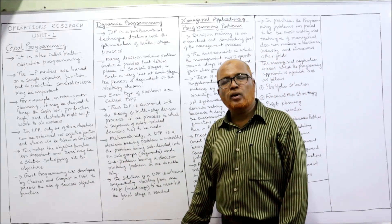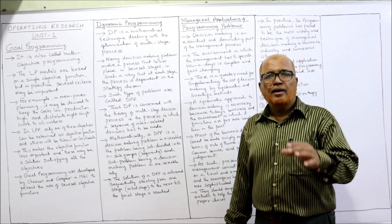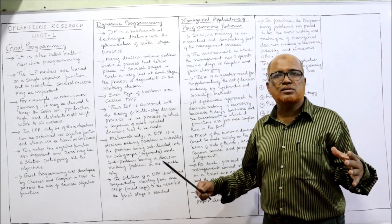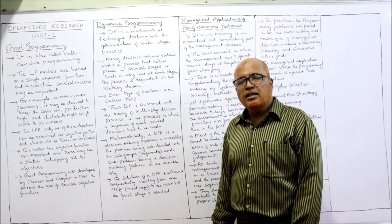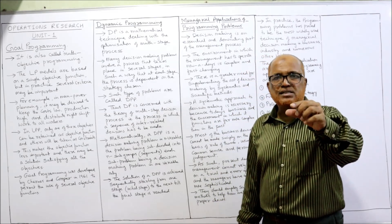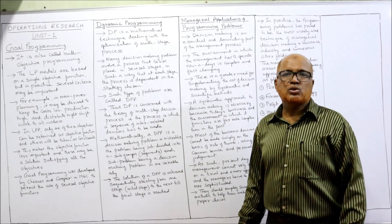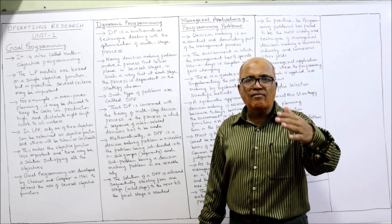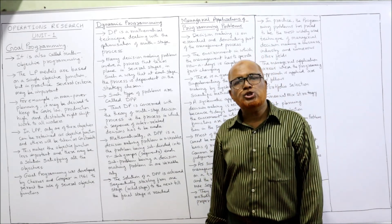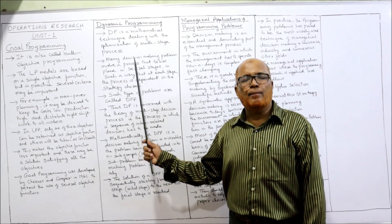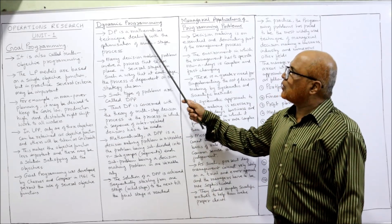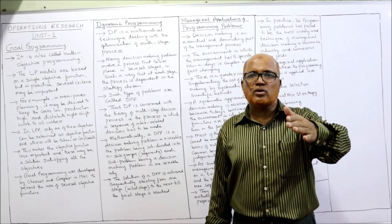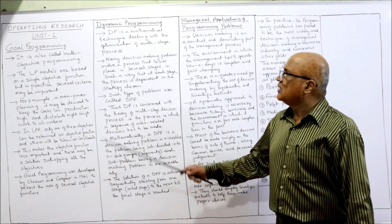Dynamic programming is also called multi-stage programming. In many decision-making problems, we come across a situation where the problem consists of a process with a number of stages, and at every stage a decision has to be taken. Dynamic programming is a mathematical technique dealing with the optimization of a multi-stage process — remember the key phrase: a process consisting of a number of stages.